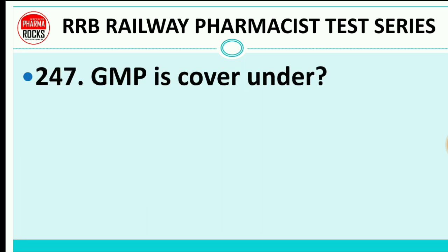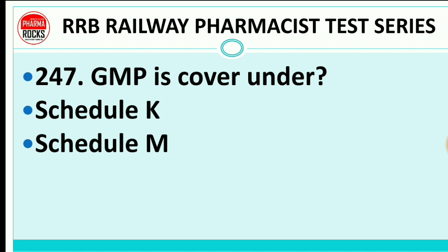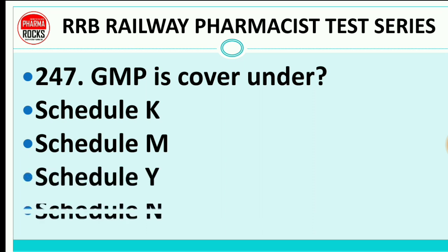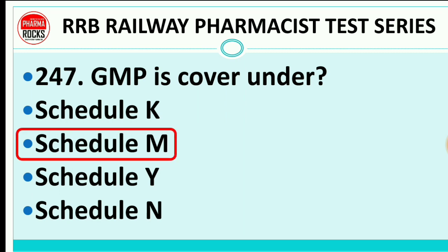Question 247: GMP is covered under Schedule K, Schedule M, Schedule Y, or Schedule N? The right answer is Schedule M. Schedule M is properly related to Good Manufacturing Practice (GMP).